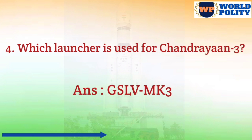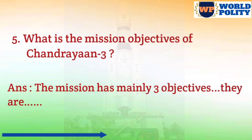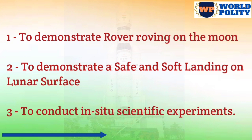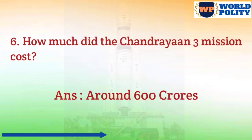Question number 4: which launcher is used for Chandrayaan 3? The answer is GSLV MK3. Question number 5: what are the mission objectives of Chandrayaan 3? Chandrayaan 3 mission has mainly 3 objectives: number 1, to demonstrate rover roving on the moon; number 2, to demonstrate a safe and soft landing on the lunar surface; number 3, to conduct in-situ scientific experiments.